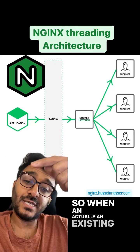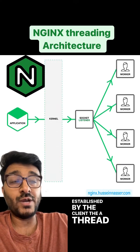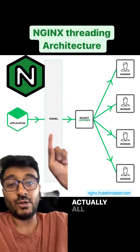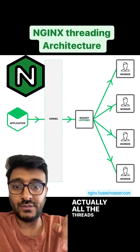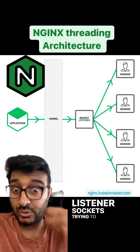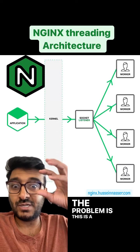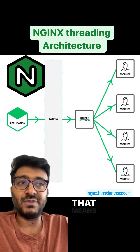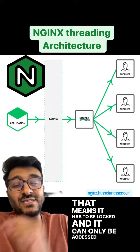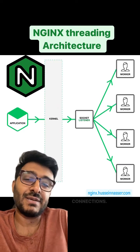When an actual existing connection tries to be established by the client, all the threads will be calling accept on that listener socket, trying to accept new connections to serve them. The problem is this is shared memory, which means it has to be locked and can only be accessed one thread at a time.